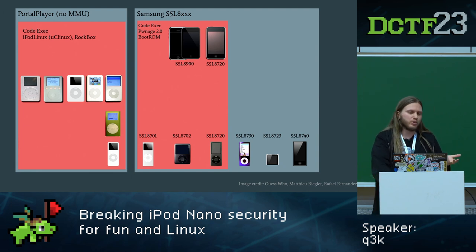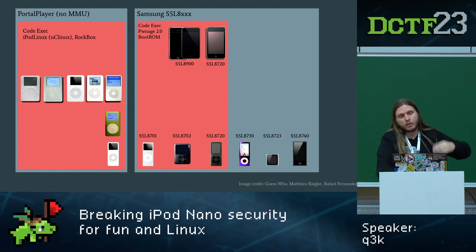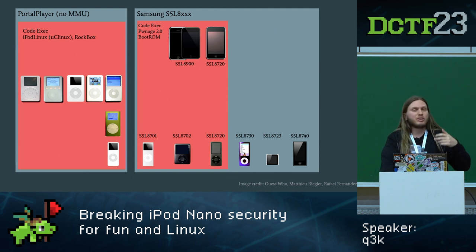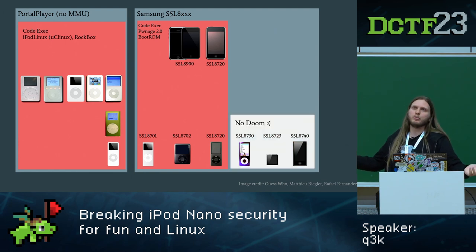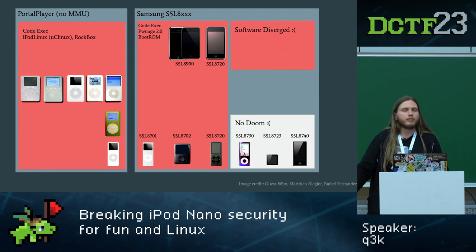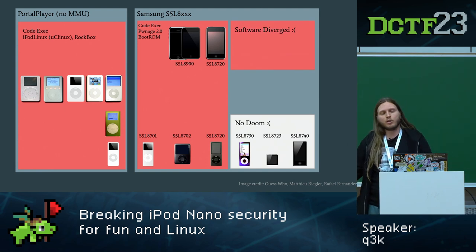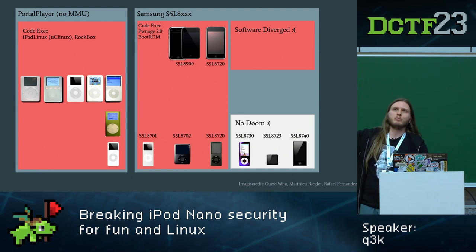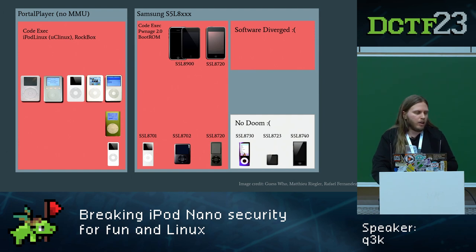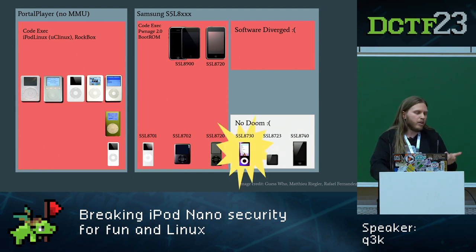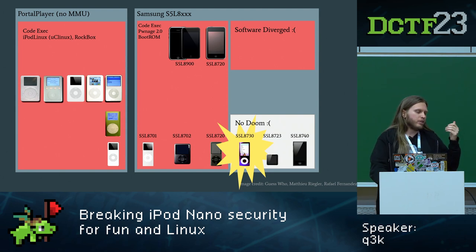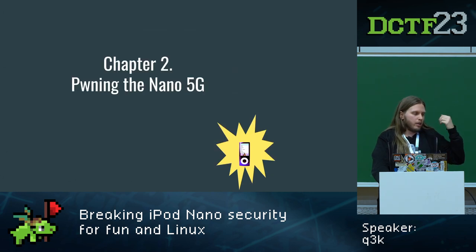All devices up through the fourth generation iPod Nano had code execution via an iPhone exploit ported by smart people. But there were three more generations with no code exec — and no code exec means no Doom. The further iPhones diverged in software and hardware enough that we couldn't steal exploits from smart people and run them on our devices nobody cares about. So, what is a hacker to do when they want to run Doom on a device nobody cares about, ten years after it's been released? I decided to look at the S5L8730 on the Nano 5G and see if I could find something to get code execution. It's a ten-year-old device — it can't be that difficult.